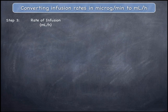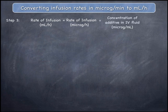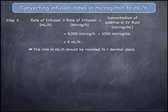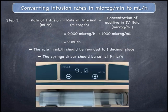The third and final step allows you to calculate the infusion rate in mils per hour by dividing the infusion rate in micrograms per hour by the concentration of the additive in the IV fluid in micrograms per mil. This is 9,000 micrograms per hour divided by 1,000 micrograms per mil, which is 9 mils per hour. The infusion rate should be rounded to 1 decimal place, and therefore the syringe driver should be set to deliver an infusion rate of 9 mils per hour.